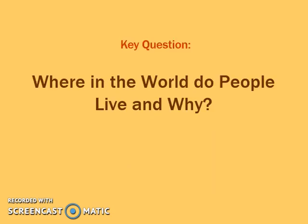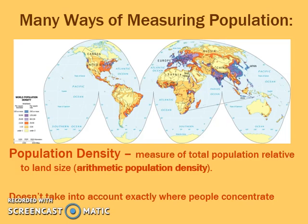This chapter deals with humans in terms of where they live and why they live there. The first question in terms of where they live is looking at population density — a measurement of the number of people per square mile or square kilometer, just a measure of the land. There are two main types of population density.